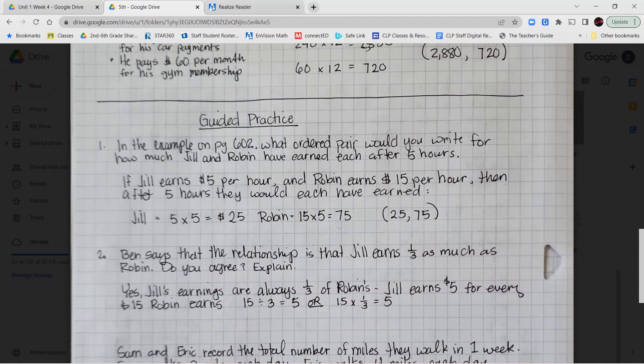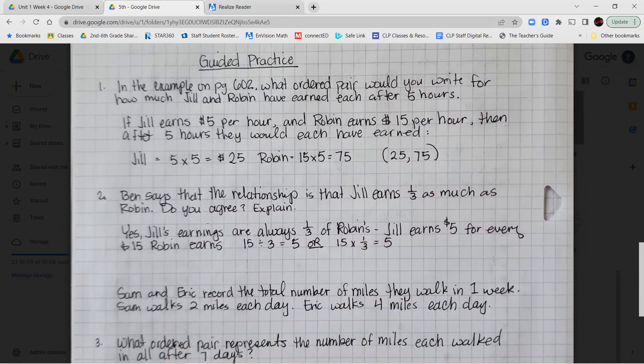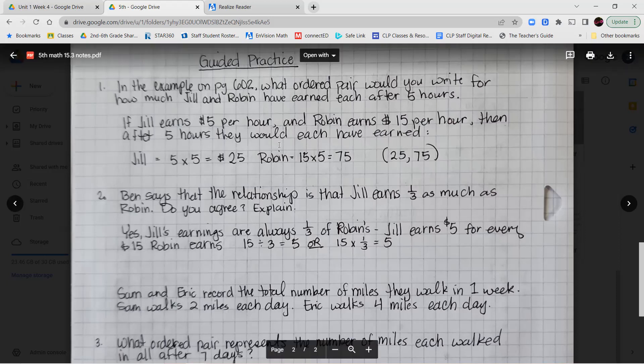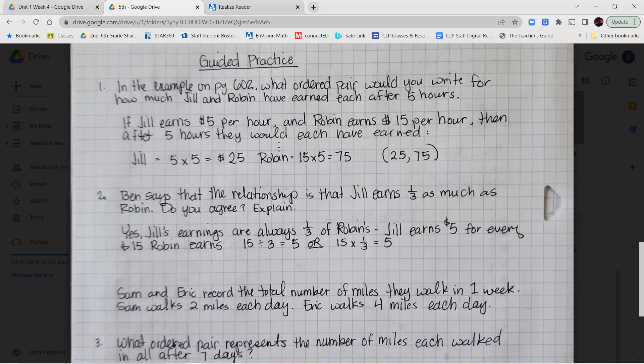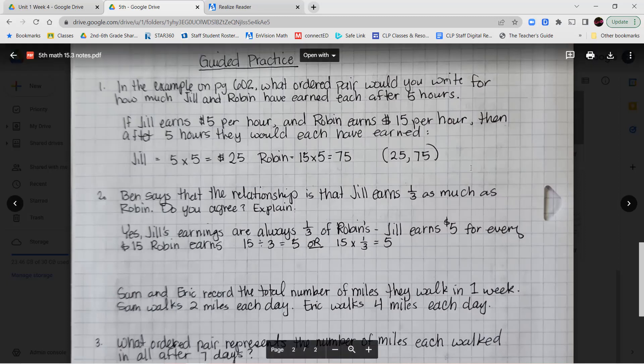Now in the example on page 602, what ordered pair would you write for how much Jill and Robin have earned after five hours? So remember if Jill earns $5 an hour and Robin earns $15 an hour, then after five hours they would each have earned 5 times 5 and then 15 times 5. So Jill would have earned 5 times 5 which is $25 and Robin would have earned 15 times 5 which is $75. And so the ordered pair that we can create for that is $25, $75. So you would go across 25 on the x-axis and up 75 on the y-axis.